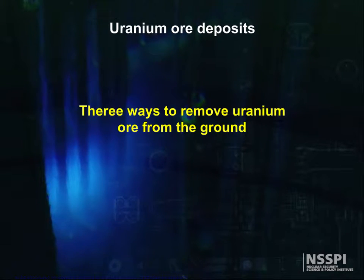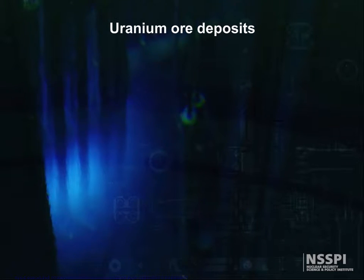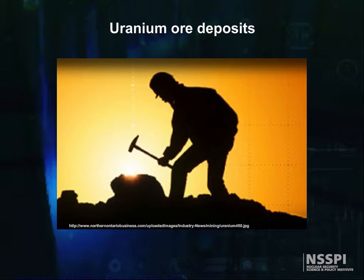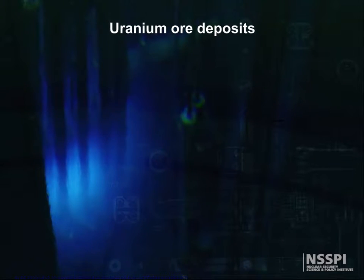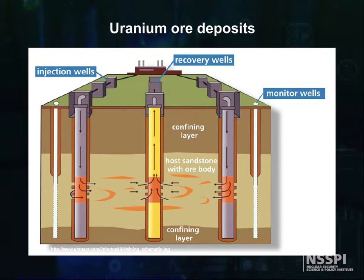Uranium ore is removed from the ground in one of three ways, depending on the location of the deposit. Uranium deposits close to the surface can be recovered using the open-pit mining method, and underground mining methods are used for deep deposits. Sometimes the ore may be extracted by in-situ recovery, a process that dissolves the uranium while still underground and then pumps the uranium solution to the surface.